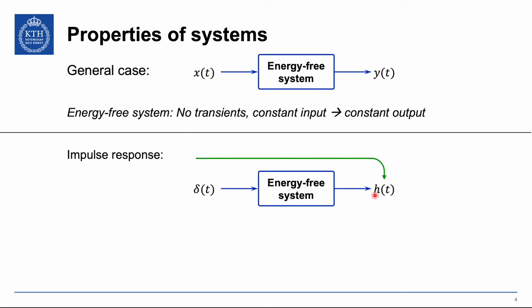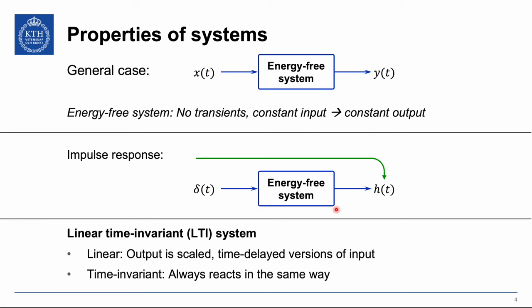There is one type of system that is particularly interesting to analyze: linear time invariant, or LTI, systems. Linear means that the output is a scaled and time-delayed version of the input, and time invariant means that the system always reacts in the same way irrespective of when we are sending a particular signal. In the remainder of this video I will introduce these concepts in more detail and give examples of things that are linear or non-linear, or time invariant or not.